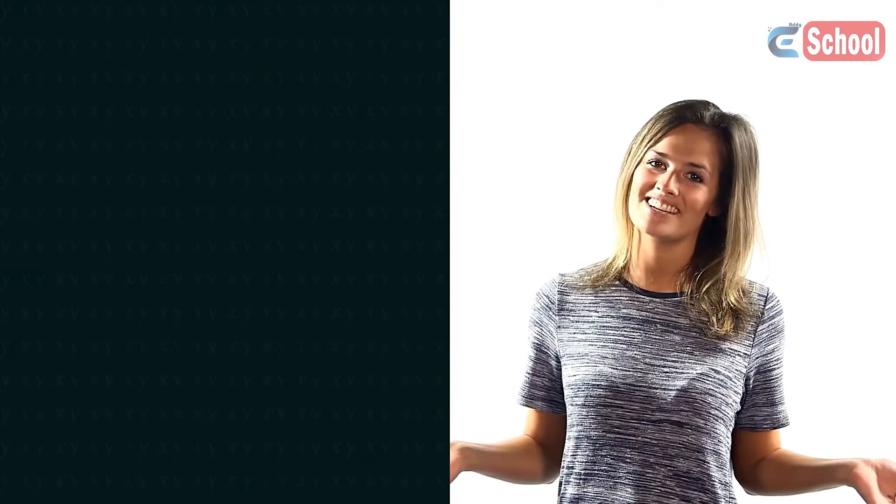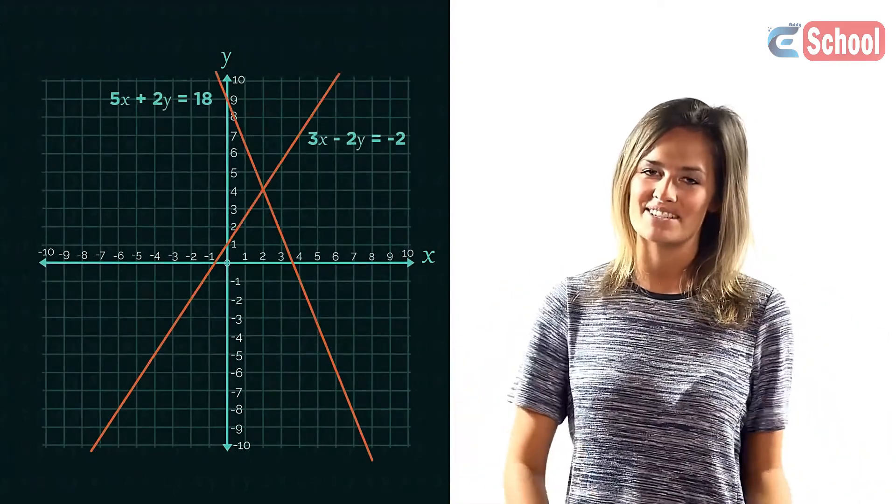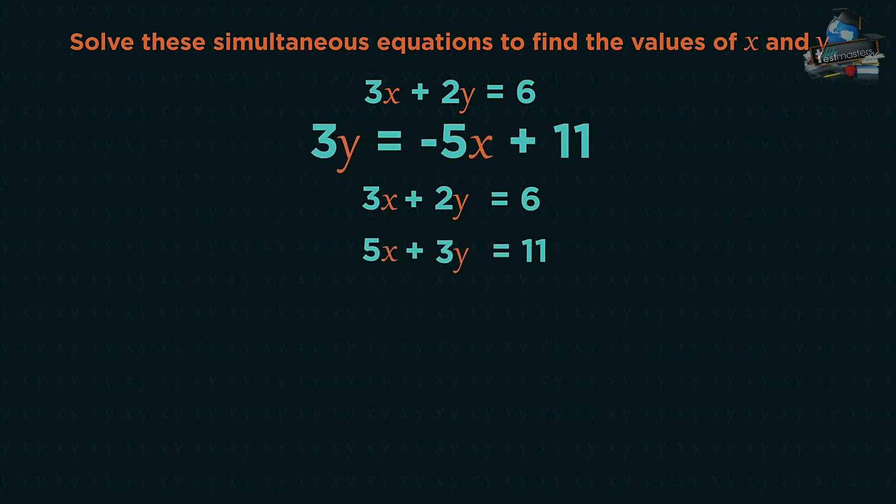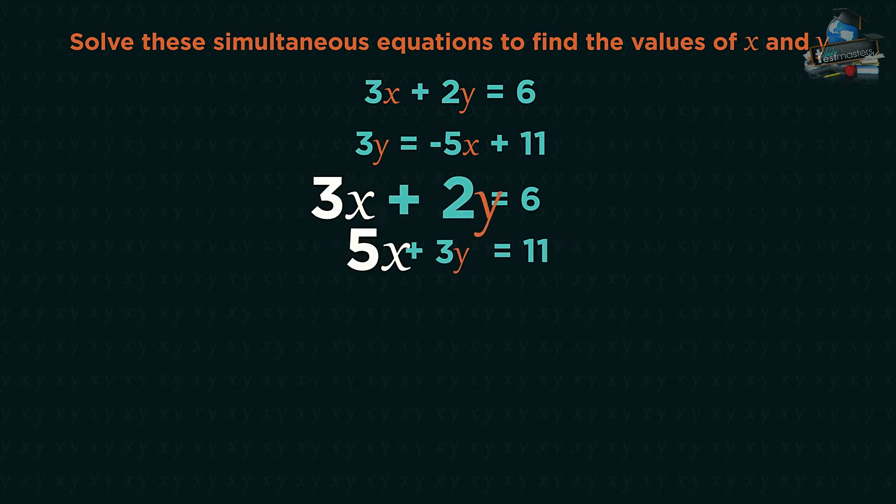That's all there is to it, much faster than having to plot the graphs. Let's have a look at another example. So we start by lining the two equations up, which means we'll need to rearrange the bottom equation to become 5x plus 3y equals 11. Now to eliminate either our x's or our y's, we need to have an equal number of either x's or y's, which we don't have.